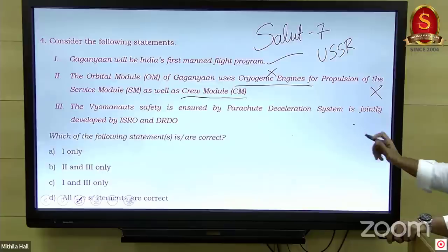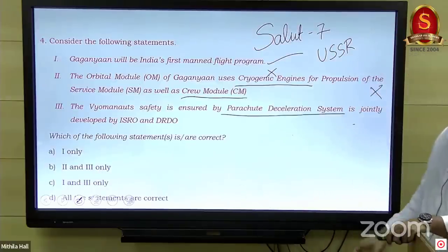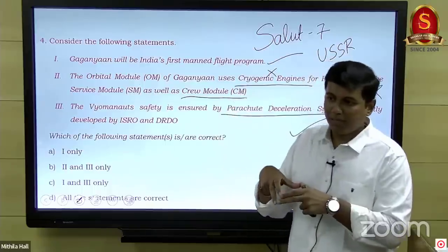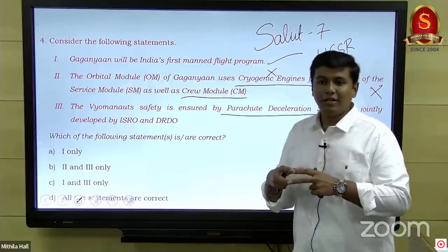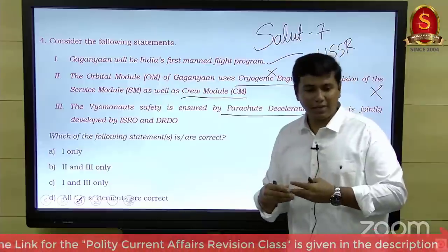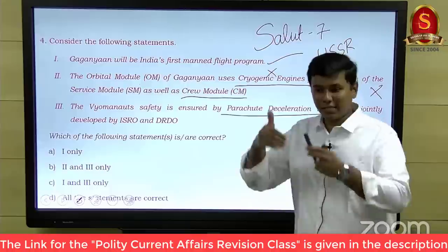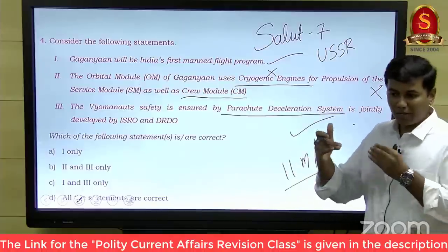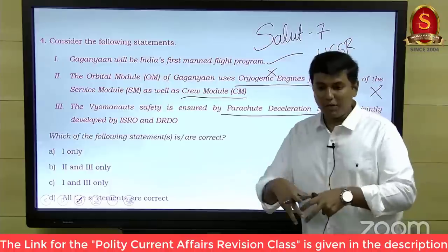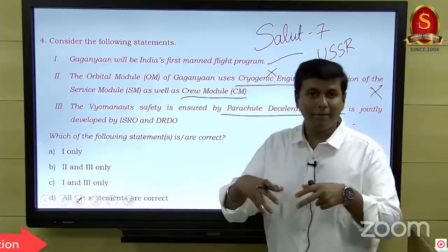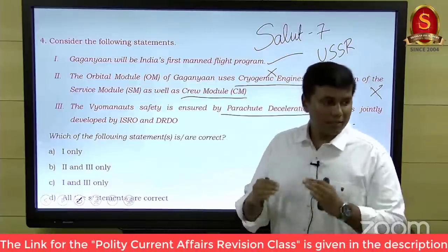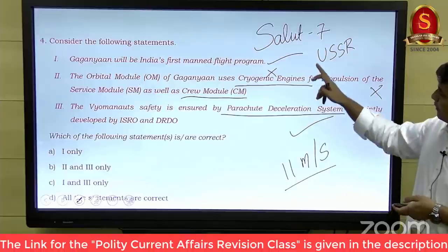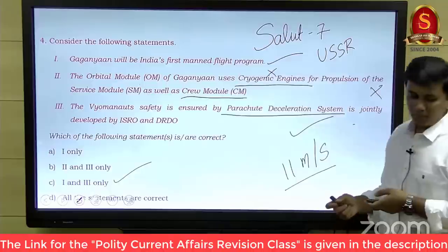Third statement: crew safety is ensured by parachute deceleration systems developed by ISRO and DRDO — this is true. When astronauts re-enter the atmosphere, the crew module faces significant friction and must be decelerated from around 250 m/s down to 11 m/s before splashing into the ocean. Parachutes are deployed, with backup parachutes for additional safety, so the module can be collected and astronauts returned safely. Third statement is correct, first is correct, second is wrong — answer is C.